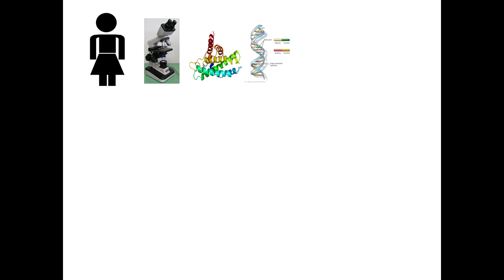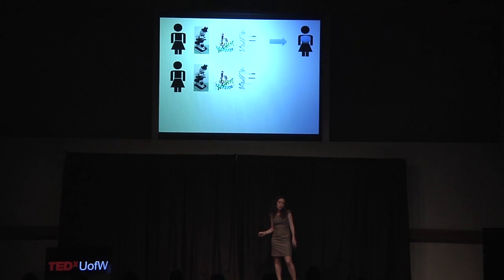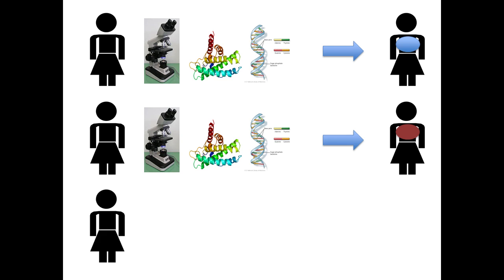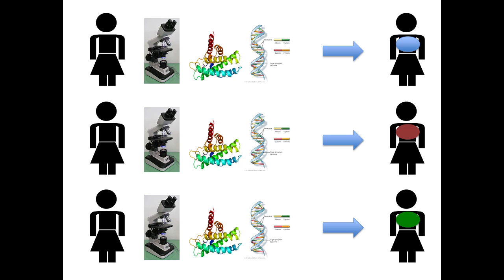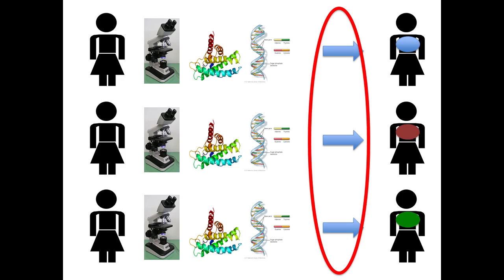A woman walks in. We collect a lot of data for her — gigabytes of data. And we want to say, based on this data, you must have the blue subtype of breast cancer, and we're going to treat you in an appropriate way. Another woman walks in, we collect the data, she has the red type. A third woman has the green type. On the left side of these arrows, we have gigabytes of data containing a detailed molecular snapshot of a given woman's tumor. On the right-hand side, we have a simple piece of information: what type of breast cancer a woman has. Linking the data to that information is not straightforward — and that's where statistics comes in.